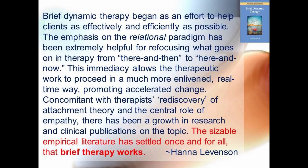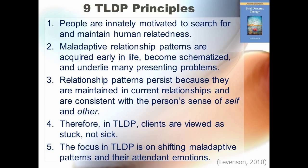There are nine fundamental principles of TLDP, and please compare these tenets to the object relations model we just studied. First, people are innately motivated to search for and maintain human relatedness. Maladaptive patterns in relationships are acquired early in life, become schematized, and underlie many presenting problems. Relationship patterns persist because they are maintained in current relationships and are consistent with the person's sense of self and other.